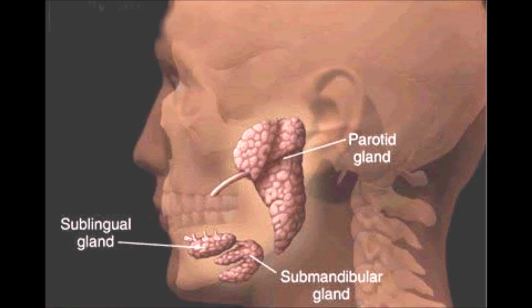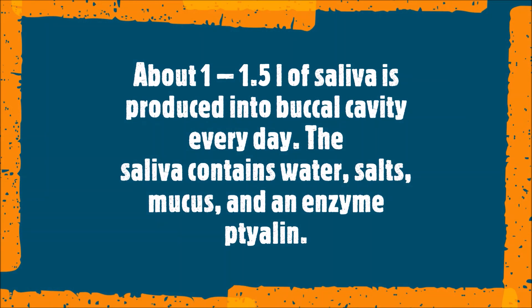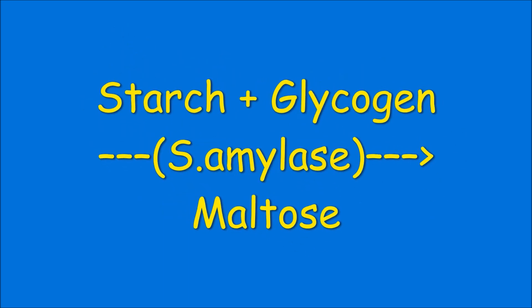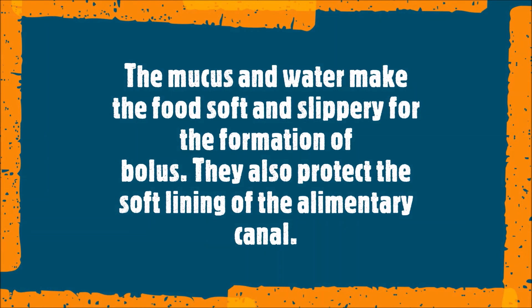The buccal cavity has 3 pairs of salivary glands: the parotid gland lying on the sides of the face, the sublingual gland lying below the tongue, and the submaxillary gland lying at the angles of the lower jaw. About 1 to 1.5 liters of saliva is produced every day. Saliva contains water, salts, mucus, and an enzyme called ptyalin, also known as salivary amylase. Salivary amylase acts on starch and glycogen and converts them into maltose. The mucus and water make the food soft and slippery, forming a mass called bolus, and also protect the soft lining of the alimentary canal.